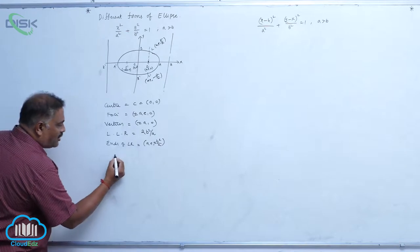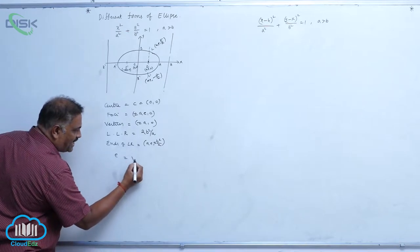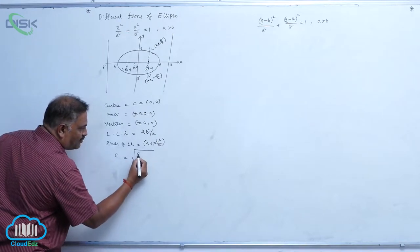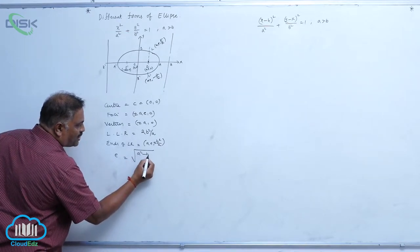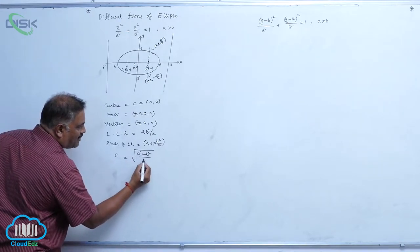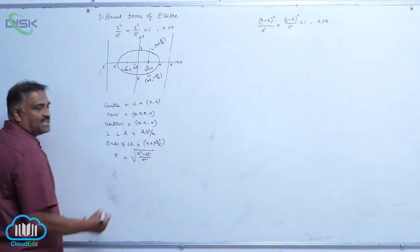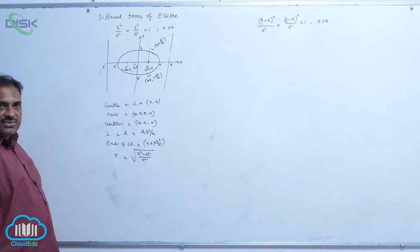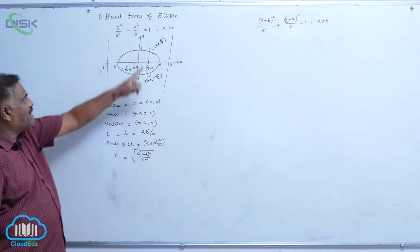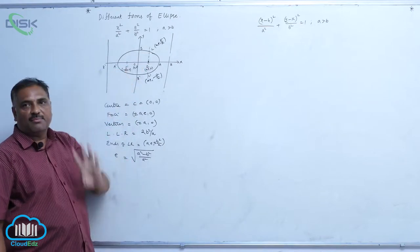The eccentricity is e = √((a² − b²)/a²), because a is greater than b.